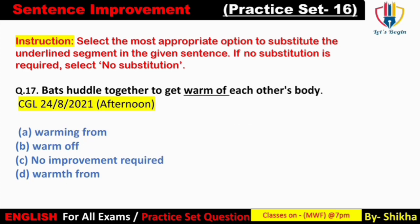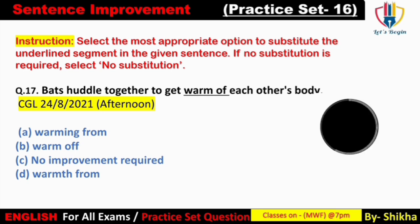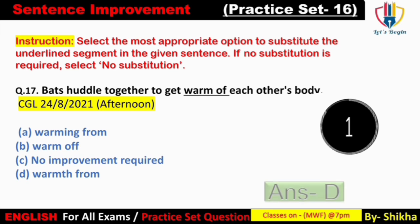Next: 'Bats huddle together to get warm of each other's body.' Option A mein 'warming from' — yeh verb form ho jayega, galat. Option B mein 'warm off' — iska bhi use nahi hoga. Answer discussion continues — 'warm' ke saath correct preposition identify karna hai.